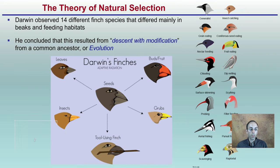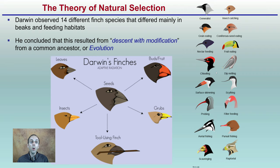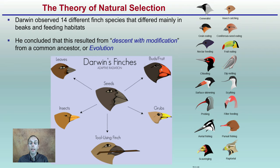The theory of natural selection: Darwin observed 14 different finch species that differed mainly in their beaks and feeding habits. He concluded that these were descendants with modifications from a common ancestor — or as we now term it, evolution. There was an original common ancestor that ate seeds. Those that ate leaves, insects, used tools, ate grubs, or ate buds and fruit had to develop different beaks to best fit the modifications for their particular environment.